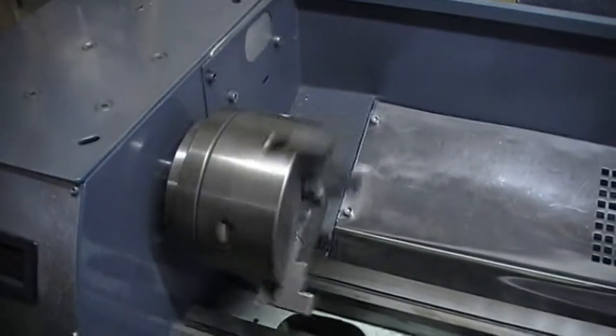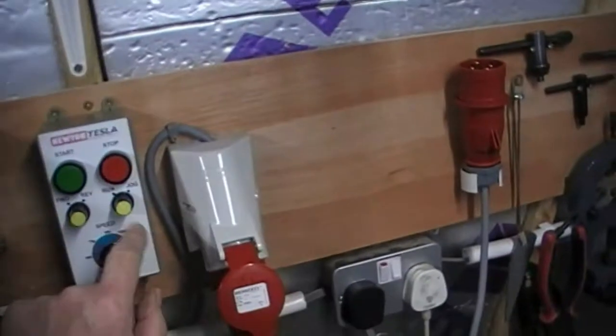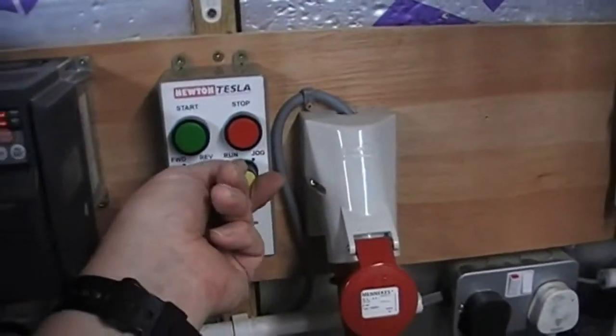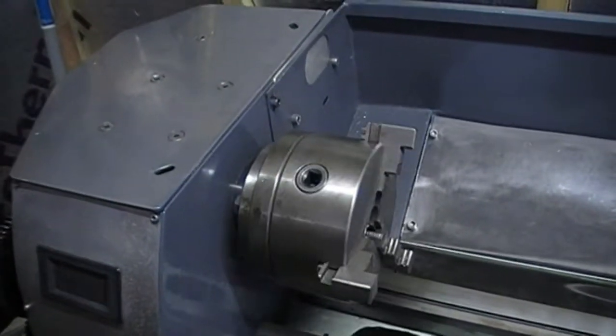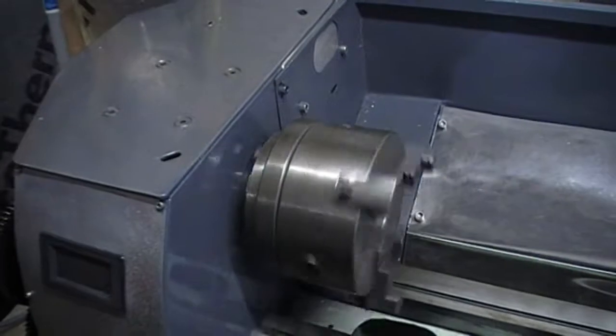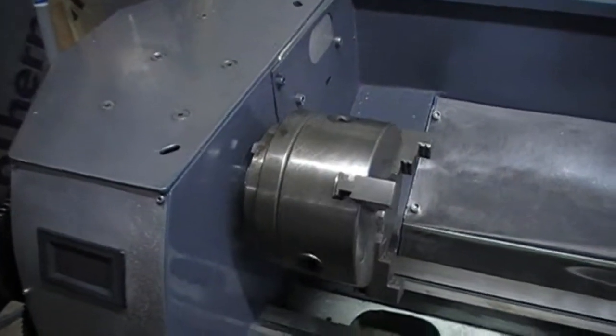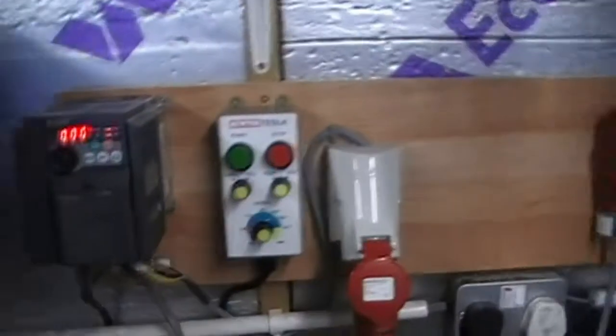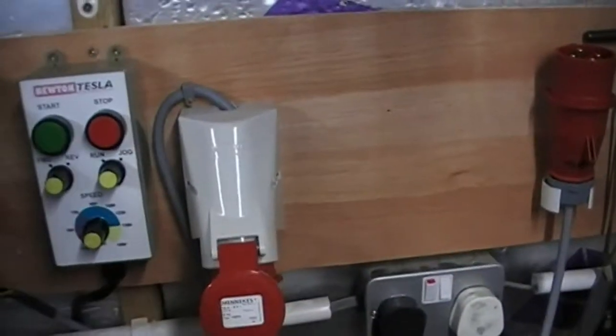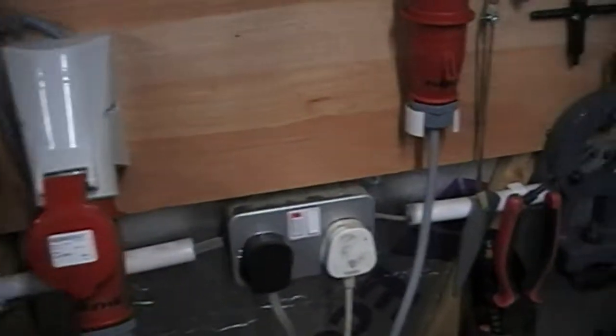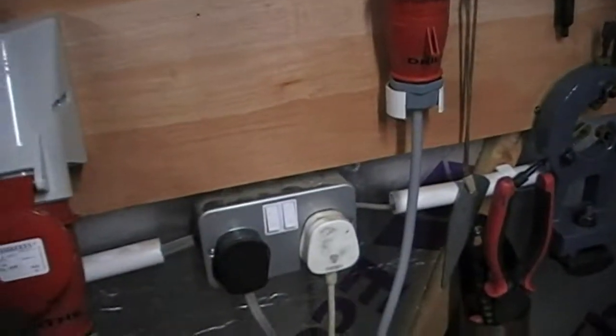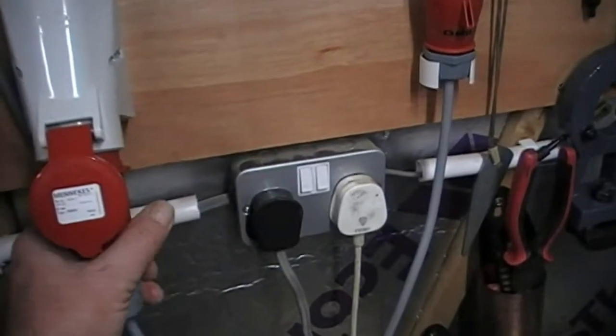Now select jog instead of run, and using the start button we just jog it like that. Remember it's in reverse still and it's jogging in reverse. So there we go, basically that's the lathe and that's the speed control setup.